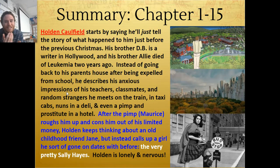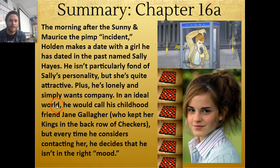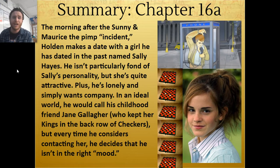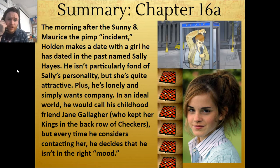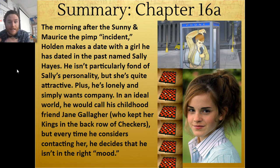Holden is lonely and nervous since leaving the school that he's been expelled from. But he gives old Sally a call. The morning after the Sonny and Maurice the pimp incident, Holden makes a date with a girl he's dated in the past — Sally. He isn't particularly fond of Sally's personality, but she's quite attractive. He's lonely. He simply wants some company. The prostitute didn't work out so well — he just wanted to talk to her and ended up getting beat up. In an ideal world, Holden would call his childhood friend Jane, but every time he considers contacting her, he decides that he isn't in the right mood.